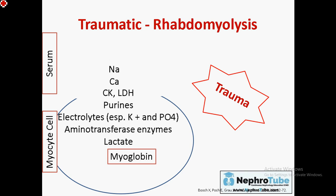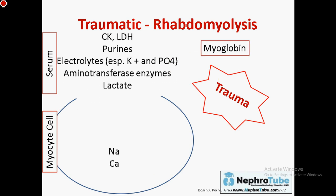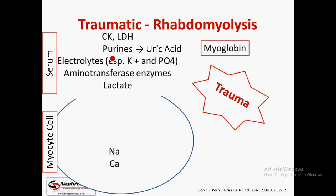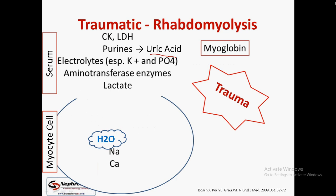When trauma affects the cell, it causes lysis or damage of the myocyte cell, leading to exchange between intracellular and extracellular components — what is inside goes out and what is outside goes in. Purines in the serum are converted to uric acid, and sodium entering the myocyte osmoses water, increasing water content inside the cell and decreasing it in the serum, causing hypovolemia.